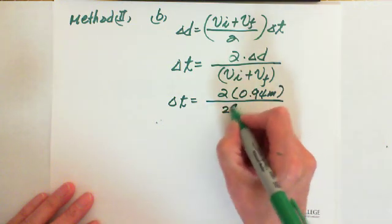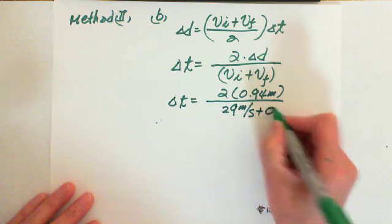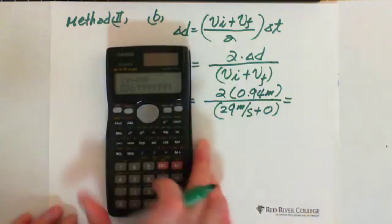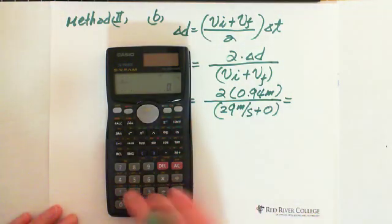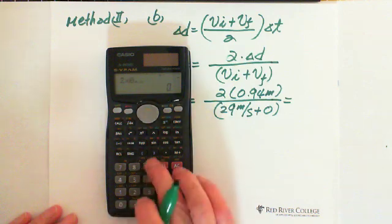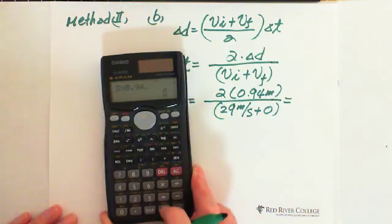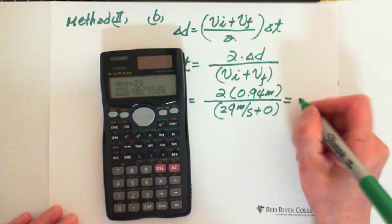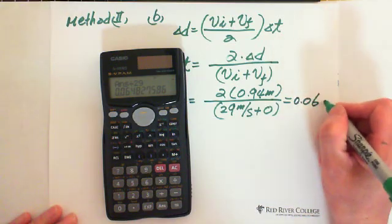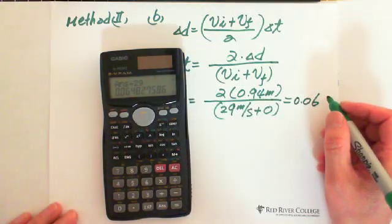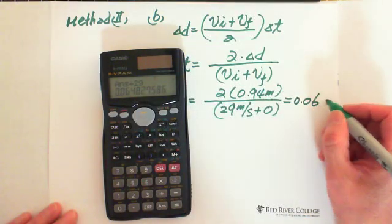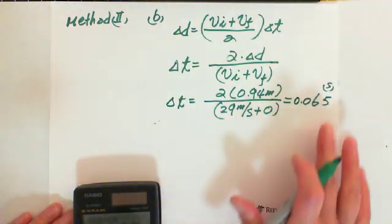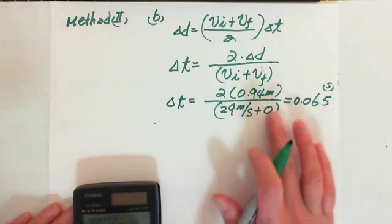Plugging in the values: Δt = (2 × 0.94 meters) / (29 meters per second + 0). On top we have 2 times 0.94, divided by 29, giving approximately 0.0648 seconds, which we round to 0.065 seconds.